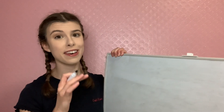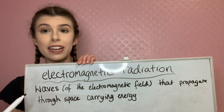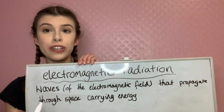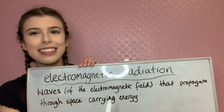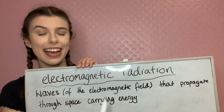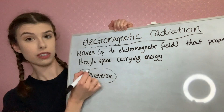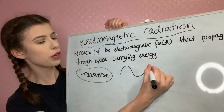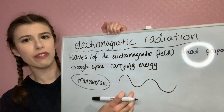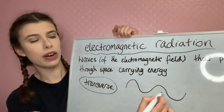Before we go any further, I want to talk to you about electromagnetic radiation. Electromagnetic radiation is just waves of the electromagnetic field that propagate through space, carrying energy. Electromagnetic waves are transverse, which means they look like what you imagine a typical wave — when someone says draw a wave, you draw this wavy line.